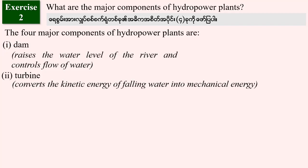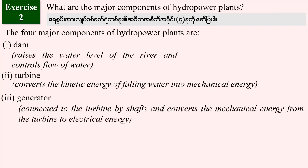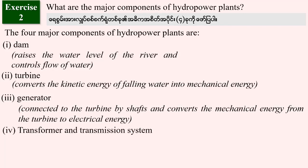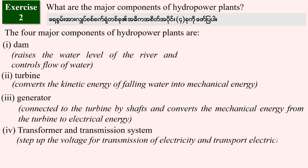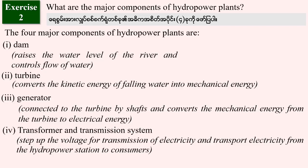The turbine converts the kinetic energy of flowing water into mechanical energy. The generator converts mechanical energy from the turbine into electrical energy. Number four, the transformer and transmission system — the transformer steps up the voltage for transmission, and the transmission system transports electricity from the hydropower station to consumers.